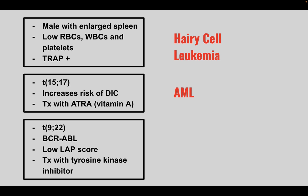Next is translocation 9;22, BCR-ABL. They have a low LAP score and you treat it with a tyrosine kinase inhibitor. This is CML. Remember, the tyrosine kinase inhibitor is imatinib.